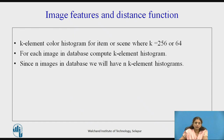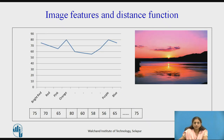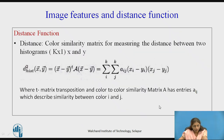One method is to plot a k-element color histogram for the items or scene, where k can be either 64 or 256. For each image in the database, we compute this k-element histogram, and we also compute the k-element histogram for the query object. Since there are n images, there will be n histograms. This histogram represents the pixel values of a given image, and once calculated, we find the distance between two images to determine which are similar or dissimilar.